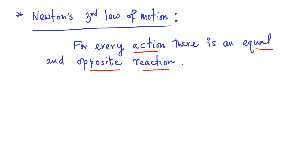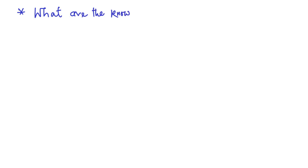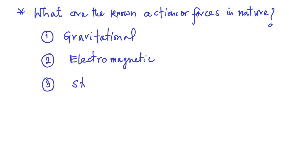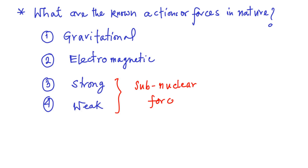In order to understand the statement of Newton's third law, let us ask the question: what are the known actions or forces in nature? Till today, we are aware of four types of fundamental forces in nature. These are gravitational force, the electromagnetic force, the strong force, and the weak force. Among these, the strong force and the weak force are sub-nuclear forces.